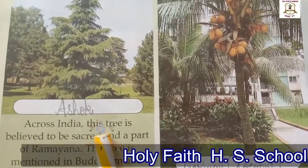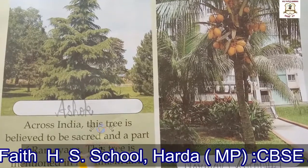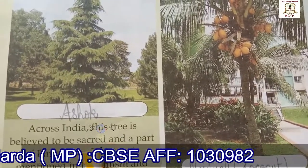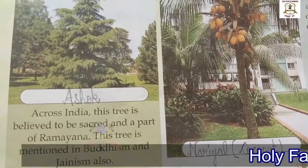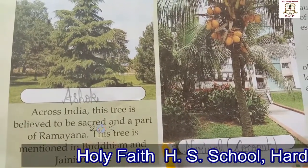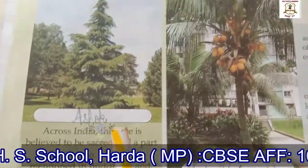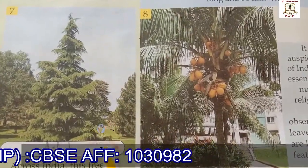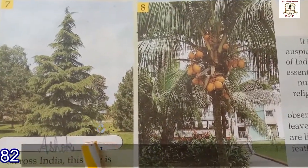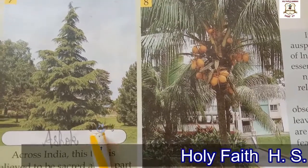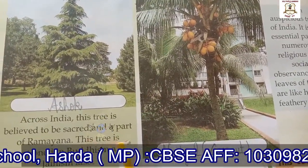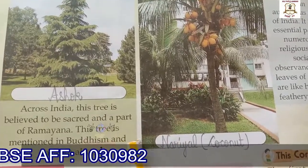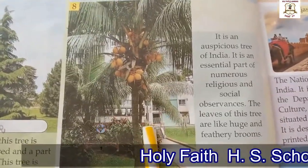Look at picture number seven. Across India, this tree is believed to be sacred and is a part of the Ramayana. This tree is also mentioned in Buddhism and Jainism. The name of this Indian tree is Ashok tree.